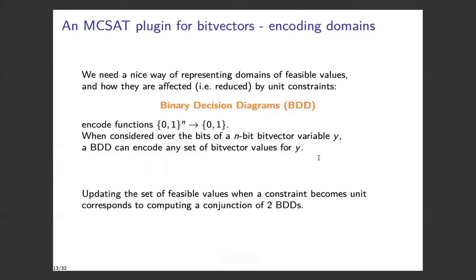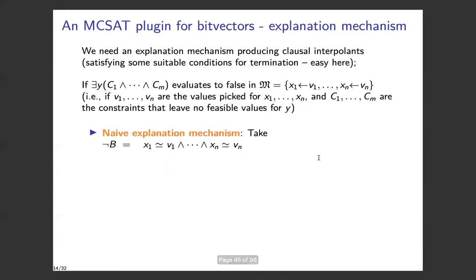Updating the set of feasible values as soon as a constraint becomes unit in Y corresponds to computing the conjunction of two BDDs. The second ingredient we need is an explanation mechanism that produces clause interpolants. The conditions for termination are easily satisfied here because the bit vector theory is finite. So we have a formula ∃Y.(C1 ∧ C2 ∧ ... ∧ Cm) that evaluates to false in the current model, and we want to explain why.